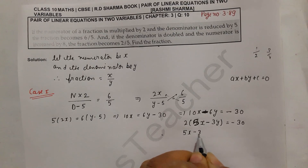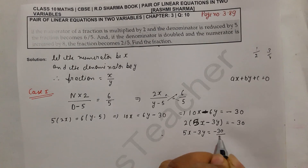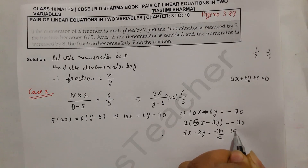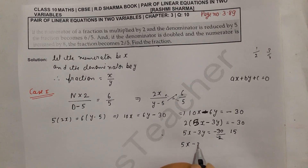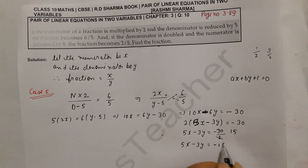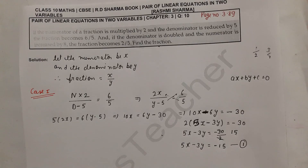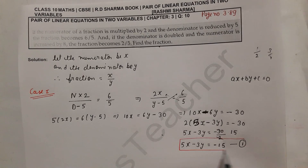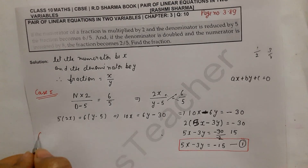So 5x minus 3y equals minus 15. This is our equation number one. Now for case two — when we have two variables we need two equations.